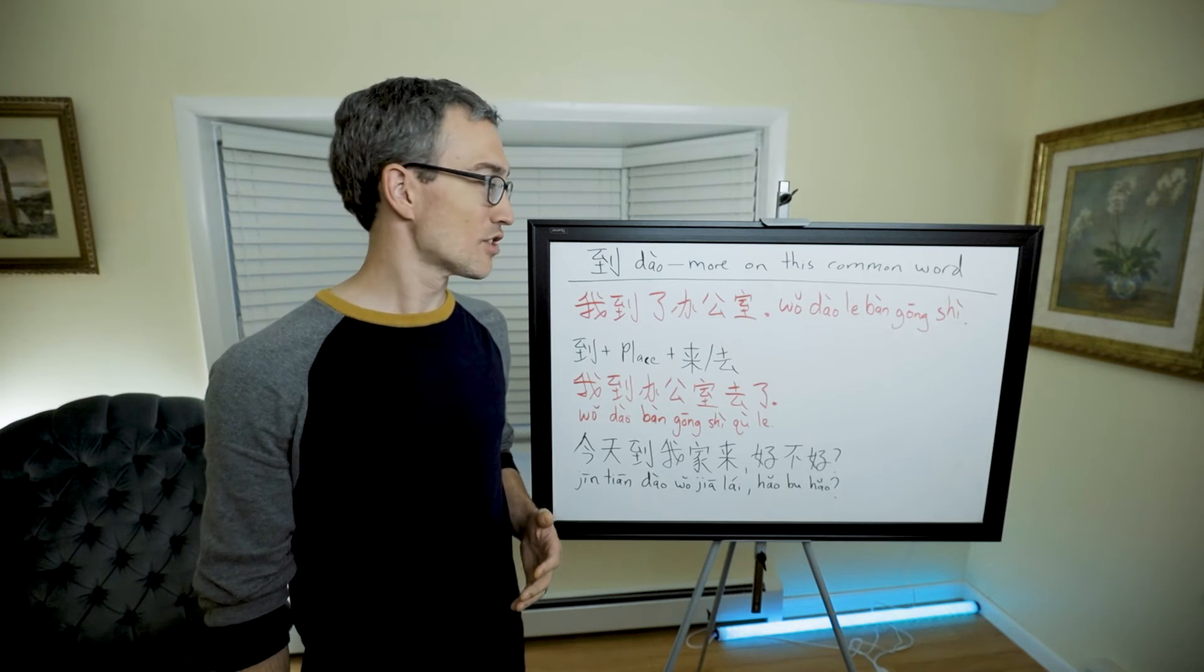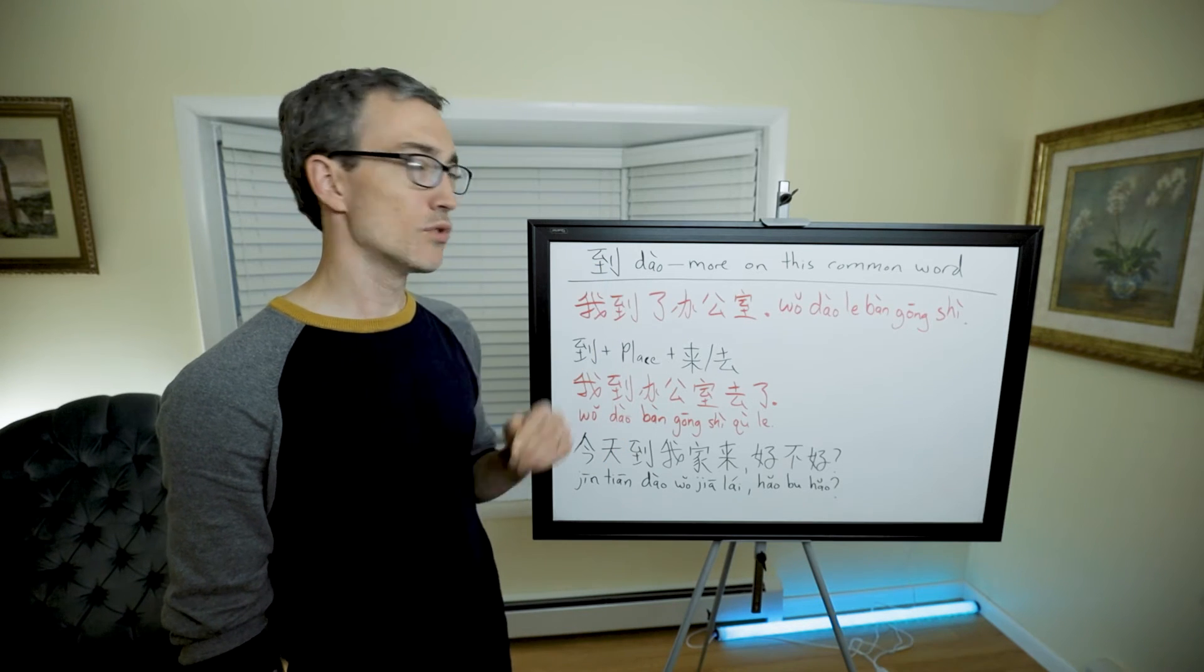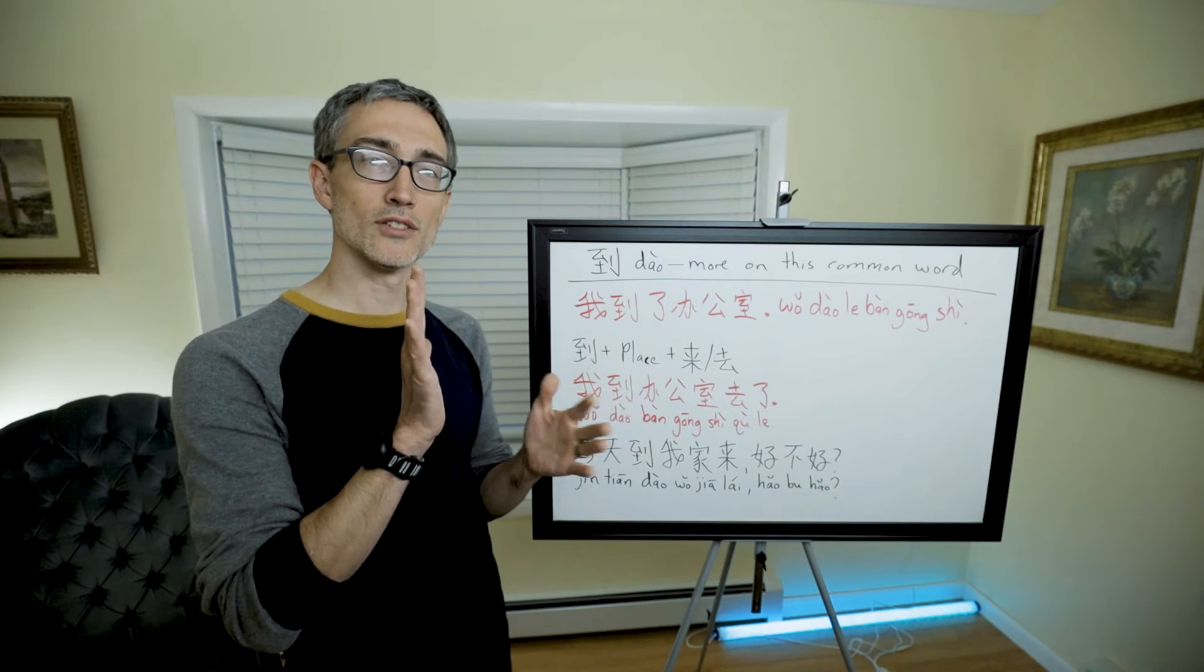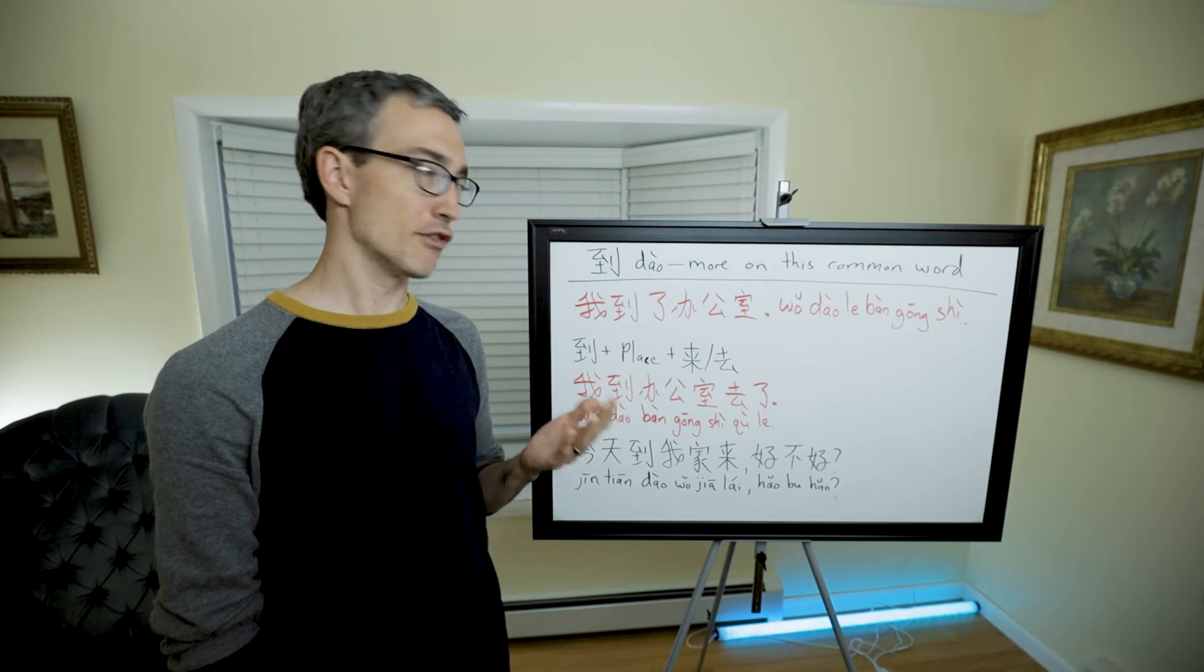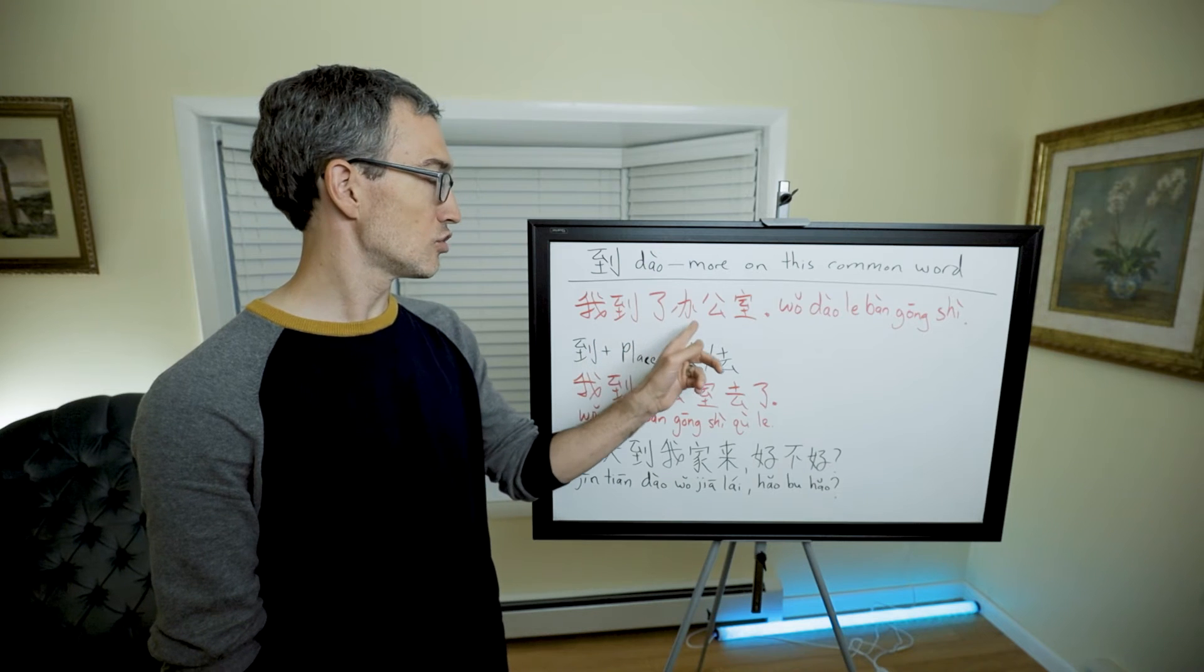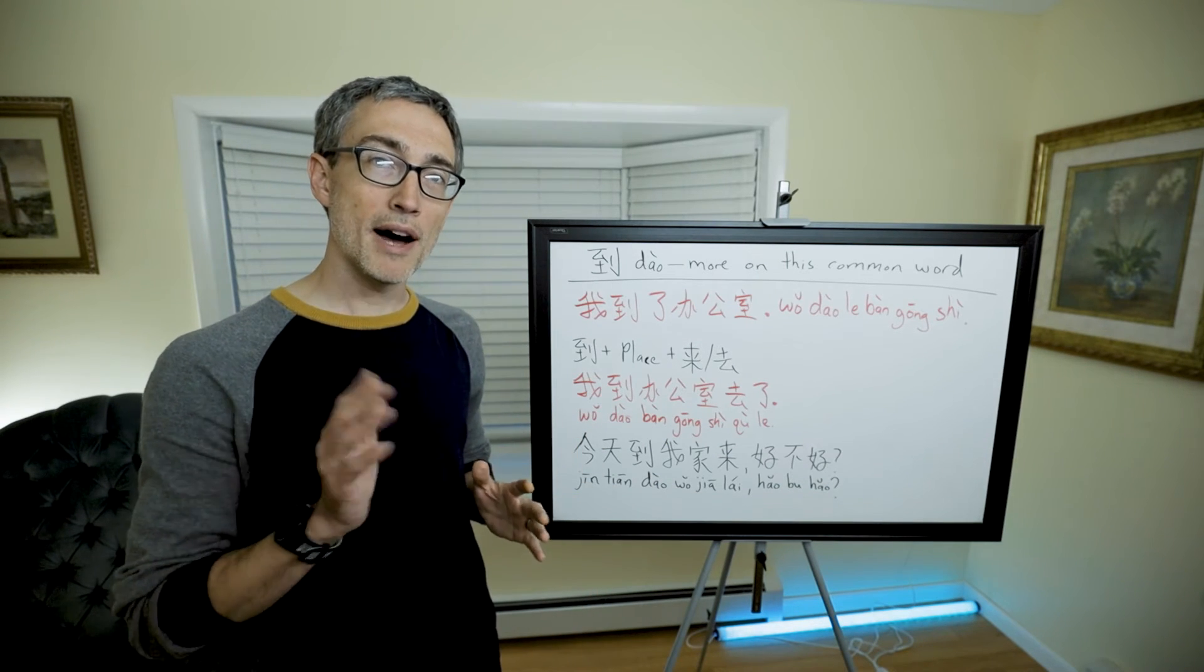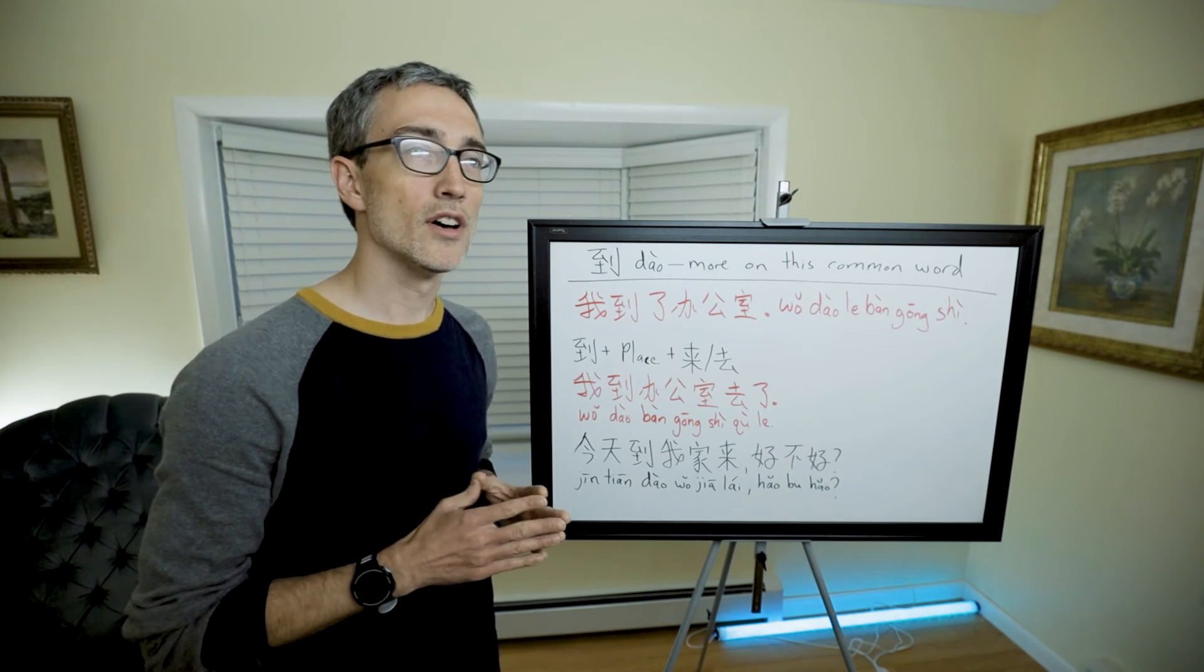In this segment we're going to talk about some expanded uses of the very common word 到. This week we just talked about it as a result complement attached to 看 or 听. Its basic meaning is to arrive: 我到了, I have arrived. Here's another example: 我到了办公室, I have arrived to or at the office.